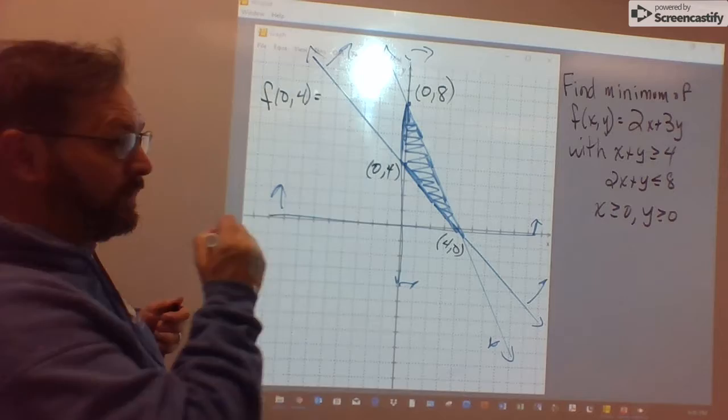The point (0, 4), this corner here, plugged into 2x plus 3y gives us 12.